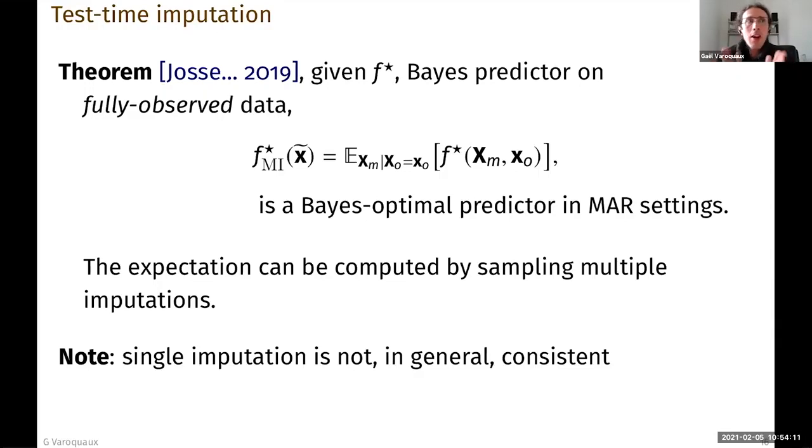By the way, nowhere here am I saying that I'm going to perform as well on the partially observed data as on the fully observed data. There will be a cost. There will be a drop in performance. However, I'm telling you that I'm performing as well as I can. That's something important. Often people want to perform as well on the partially observed data as on the full data. In general, this is not possible.